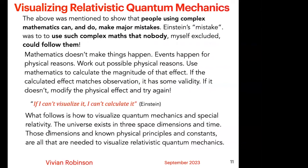Now, I mentioned the above to show that people using complex mathematics can and do make major mistakes. It's not that there was any mistake made by Einstein, other than using such complex maths that nobody could really follow them. Mathematics doesn't make things happen — they happen for physical reasons. My suggestion is: work out the possible physical reason, use mathematics to calculate the magnitude of the effect. If the calculated effect matches observation, it has some validity. If it doesn't, modify the physical effect and try again. Just because a mathematical answer has been arrived at doesn't mean it is valid unless it has some physical effect supporting it.